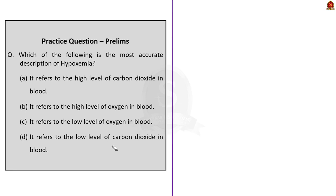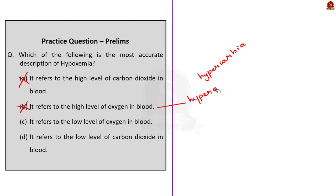The first statement — it refers to the high level of carbon dioxide in the blood — is wrong because that is hypercarbia. The second — it refers to high level of oxygen in the blood — is also not true as that means hyperoxia. The third statement — it refers to the low level of oxygen in the blood — is correct, as low level of oxygen in the blood is called hypoxemia, which we saw in the discussion. The fourth — it refers to the low level of carbon dioxide in the blood — refers to hypocarbia. So the correct option is C.